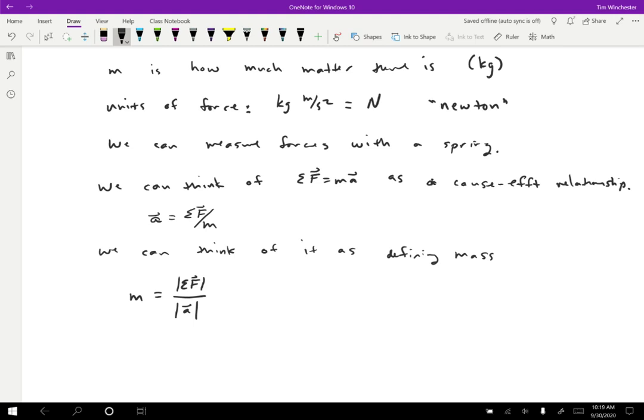And so notice a couple of things about this expression. So one is I put magnitudes around the vectors because you can't divide vectors. In this case, the vectors have to be in the same direction. So there's not really any confusion about what it means to divide them. But just to make it really clear, we have to take the absolute values for that relationship to make any sense. And we can interpret the mass here as how resistant an object is to moving. So if I apply the same force and I get less motion, then I have to assume that the object is more resistant to moving. That's what a larger mass means.